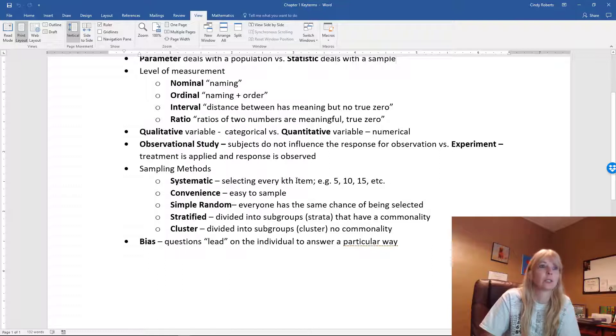Convenience, just easy to get. I'm going to do a survey in my neighborhood because I don't like to go far, I can just go outside. Simple random is the best. The example I always use is you put all everybody's name in a hat and everybody has the same chance of being selected.